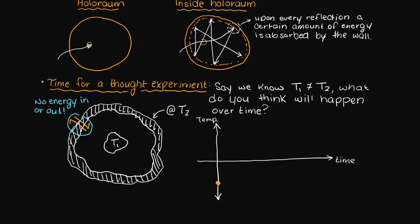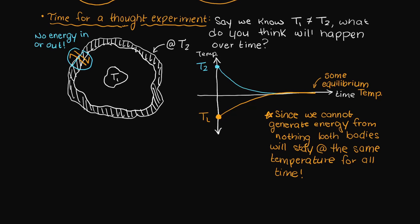Well, T1 and T2 will approach and eventually equal one another. Therefore, we know from thermodynamics that since we can't just generate energy, both bodies will remain at this same temperature. Therefore, these bodies must radiate all energy that they absorb.